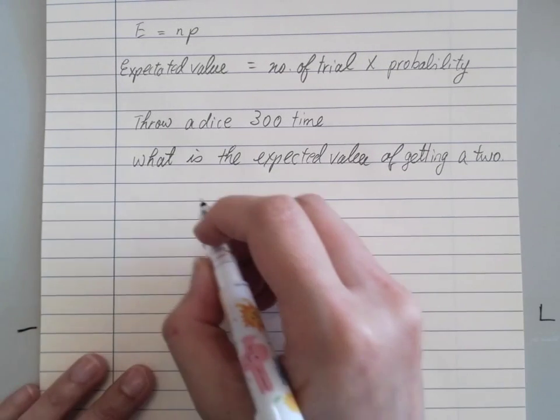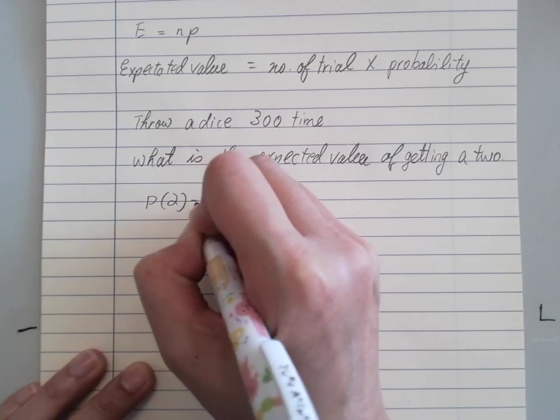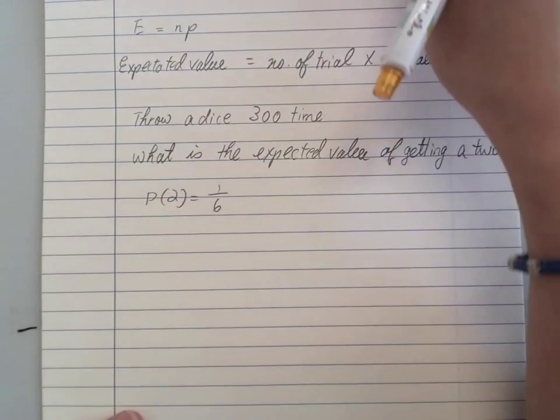The probability of getting a 2 is 1 over 6. Therefore,